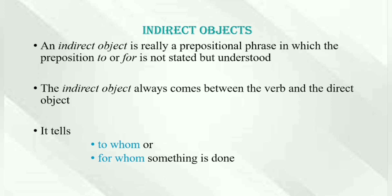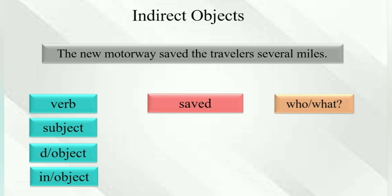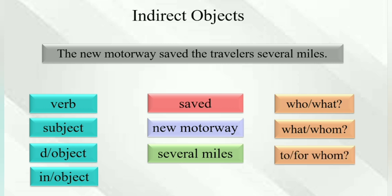It is really easy to identify indirect objects in a sentence — you just put the question 'to whom' or 'for whom' something is done. For instance, the sentence is: 'The new motorway saved the travelers several miles.' First we pick up the verb: saved. Who saved? The new motorway. The new motorway saved what? Several miles. For whom? For the travelers. So 'travelers' is the indirect object.